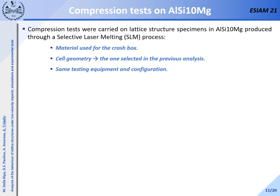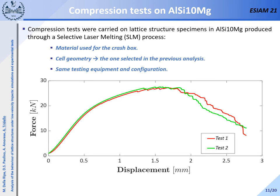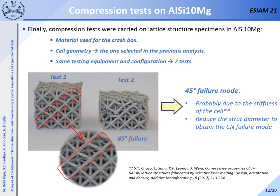Compression quasi-static tests were thereafter carried out on lattice structure specimens in aluminum-silicon-magnesium alloy, which is the material that will probably be used for the crash box. The specimens were produced through a selective laser melting process with industrial optimized parameters. The cell geometry was the one selected in the previous analysis and the same testing configuration and equipment was considered. The force-displacement curves for the two tests are reported. The three peaks and valleys corresponding to layer failures were not found, with a drastic drop in displacement after the peak. This experimental curve therefore suggests a different failure mode occurred for this material.